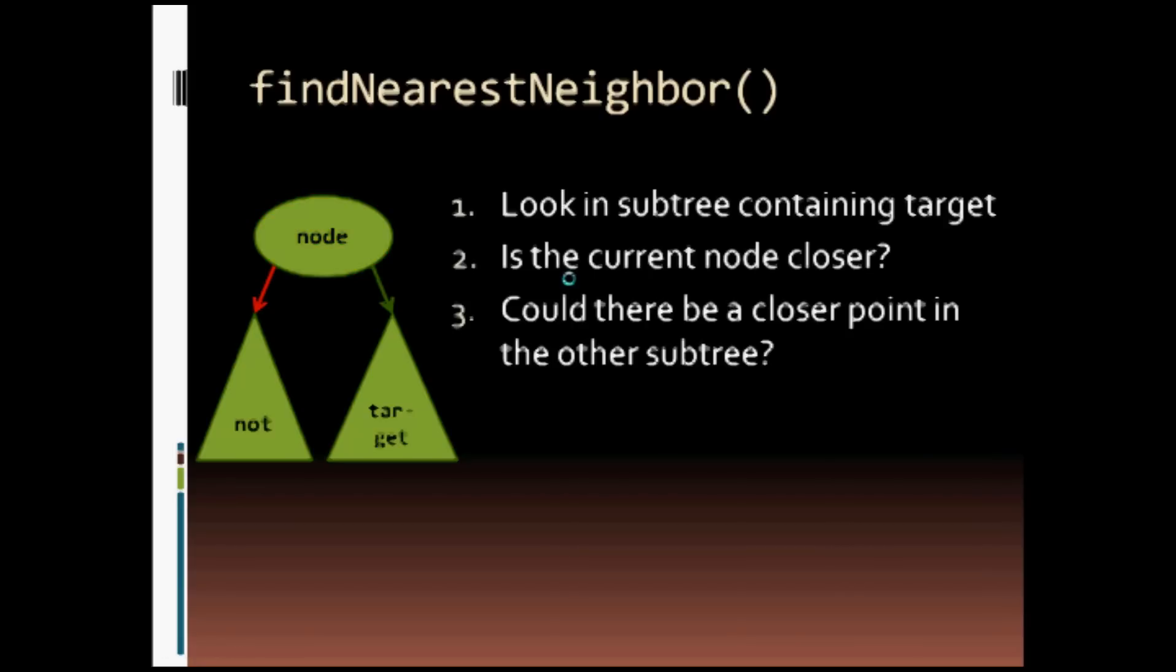Then we check, could there be a closer point in the other subtree? This is based on comparing the current node's position in the dimension we are looking at to the target's position in the dimension we are looking at. If that distance is less than our radius between the current closest point and the point we are looking for, our target,